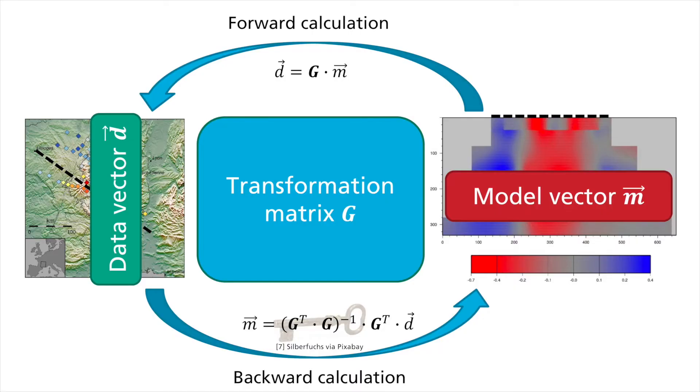This formula represents one of the most important inversion concepts in geophysics and makes it possible to create images of underground structures such as mantle plumes, but also images of the human body using computer tomography.